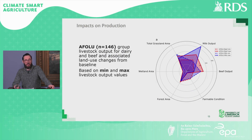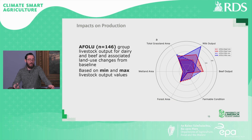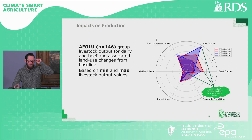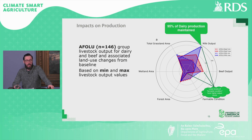Now we look at land use change and the impacts on livestock outputs. The scenarios represent the minimum and maximum values for milk and beef output for the AFOLU group relative to the 2015 baseline. In terms of land uses, we have total grassland area, wetland area, forested area and farmable condition. Farmable condition is defined as the removal of animals from the land without the implementation of an alternative land use. Lower levels of farmable condition result in higher levels of output, meaning higher rates of implementation of offsetting land uses reduces the need for destocking. In one scenario, 95% of production is maintained, however there is a cost to dairy production.